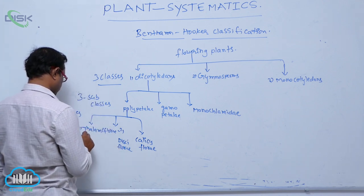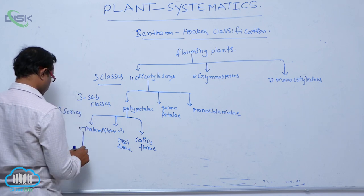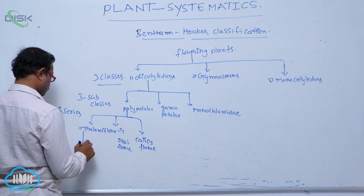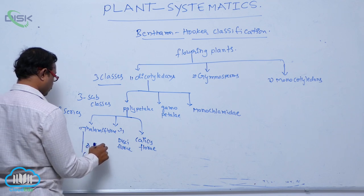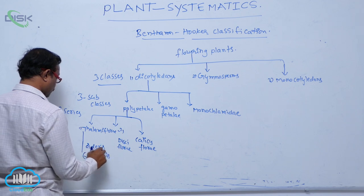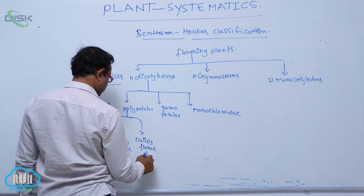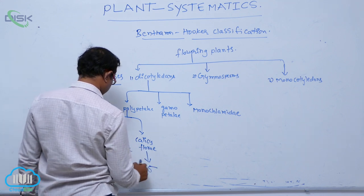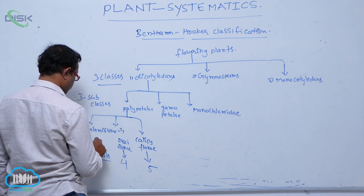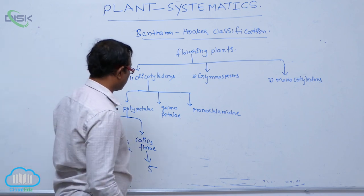Thalamiflorae has six orders. According to Bentham and Hooker, orders are known as cohorts. So, that is known as the Polypetalae.